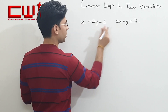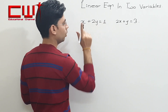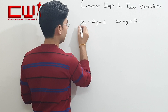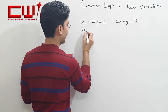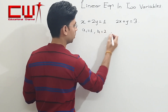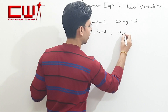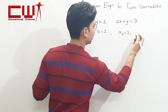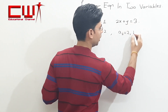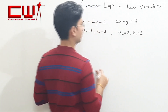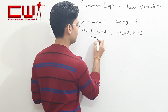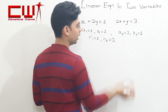x का coefficient यहाँ पर 1 मानेंगे। हम यहाँ पर देख लेते हैं कि coefficients क्या हैं। A1 क्या है? 1. B1 क्या है? 2. A2 है 2. और y का coefficient जिसको B2 बोलते हैं, B2 यहाँ पर 1 है। 1 and 3 यह C1 और C2 होते हैं, तो C1 है 1 और C2 है 3.